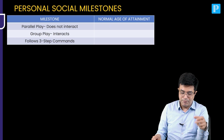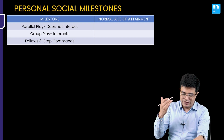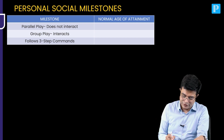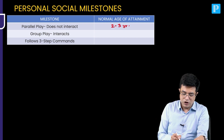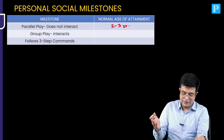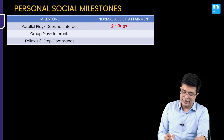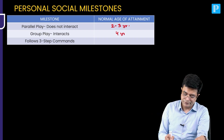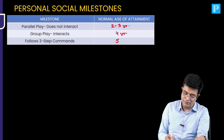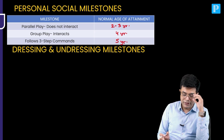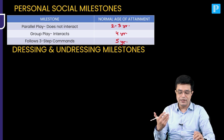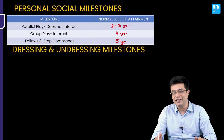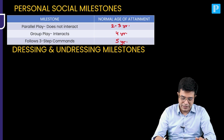Moving further: parallel play, where the child does not interact and plays alone, has a normal age of attainment between 2 to 3 years. Group play, where the child interacts with others, comes at 4 years of age. Following 3-step commands starts from 5 years of age.